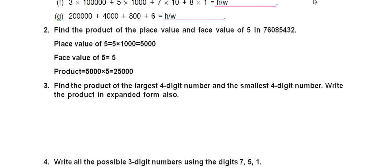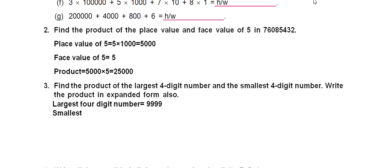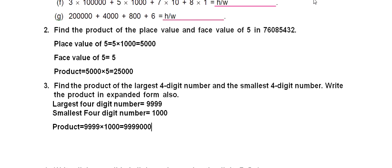Next, find the product of the largest 4-digit number and the smallest 4-digit number, and write the product in expanded form. The largest 4-digit number is 9,999 and the smallest 4-digit number is 1,000. Product means multiplication, so the answer is 9,999 × 1,000. I hope that is clear.